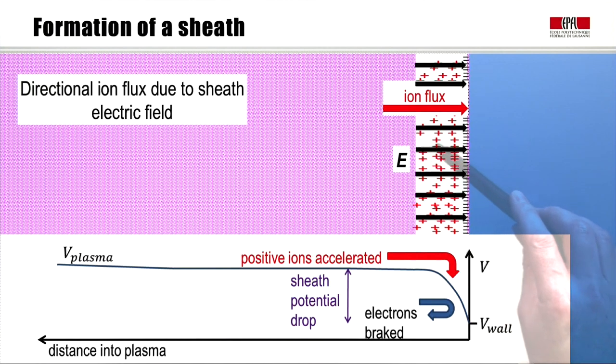This positive space charge in the sheath causes an electric field towards the wall, and this directs the ion flux. There is a directional ion flux to the wall due to the sheath electric field.